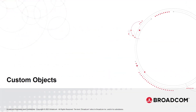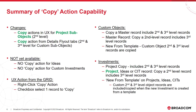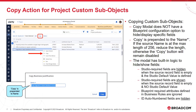So the first thing we're going to look at is custom objects copy actions. Before we explore further the copy actions that were added this release, I wanted to provide a summary of the actions that existed prior to today and the capabilities. Anything that is new this release is highlighted in green. There are two ways that you can copy project custom sub-objects. The first way is you can right click and select the copy action from the menu. The second is to select a particular row that you want to copy and then click the copy button.